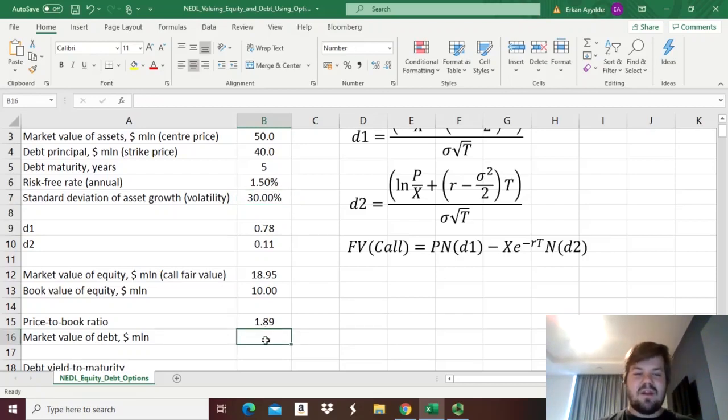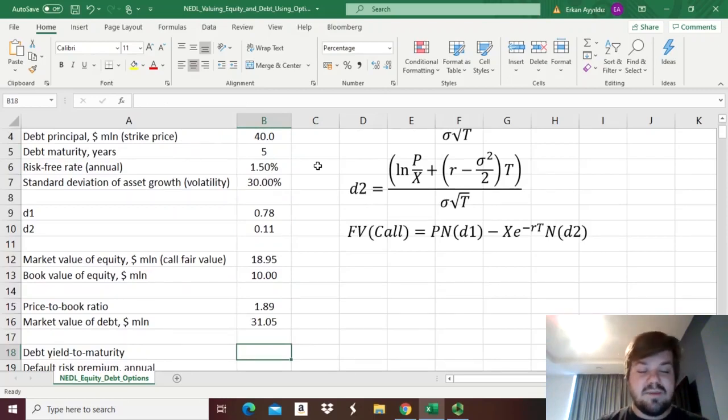Given the fact that we know the market value of equity and the market value of assets, we can figure out the market value of debt, as well. If we subtract the market value of equity from the market value of assets, we can see that the market value of debt is slightly above 31 million, and the notional, the book value of debt, the debt principle, is actually 40 million dollars. So here, we can actually figure out what is the yield to maturity of such debt, and figure out what is the default risk premium for a company with such level of risk.